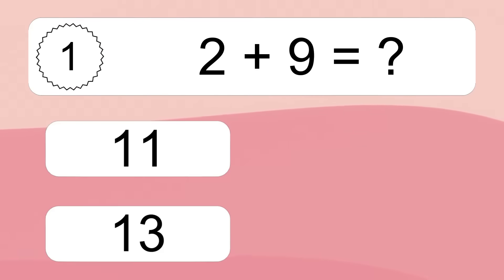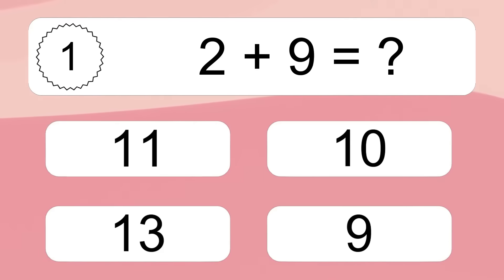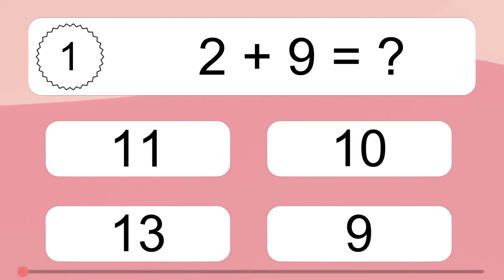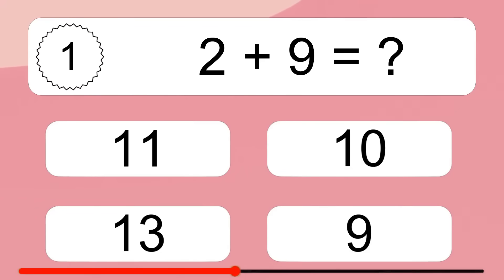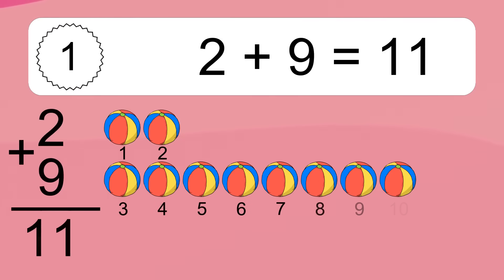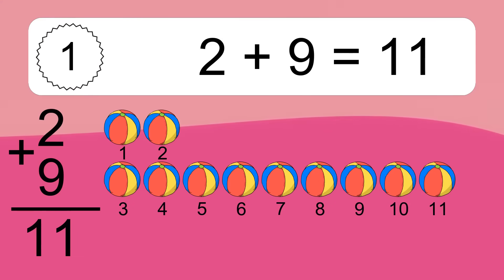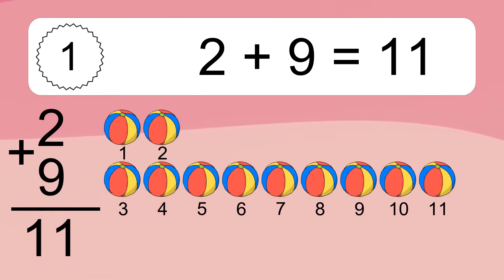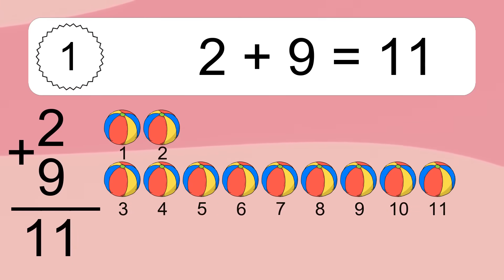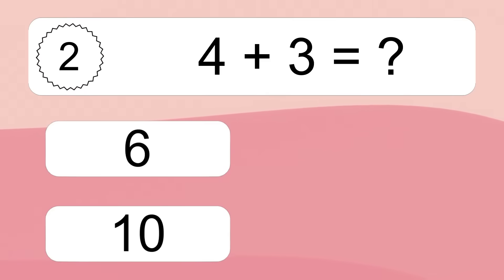2 plus 9 equals what? 1, 2, 3, 4, 5, 6, 7, 8, 9, 10, 11.